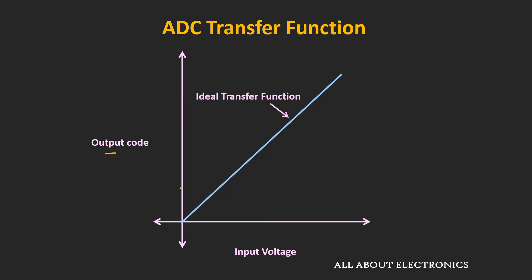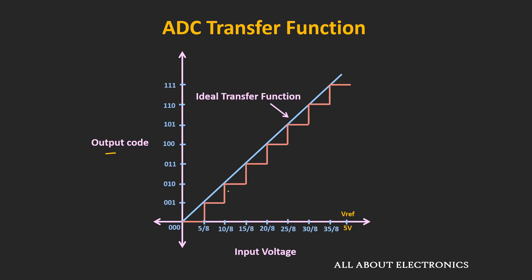The ideal ADC has infinite resolution, meaning for any change in the input voltage it has a corresponding output code. But if you see the actual transfer function, it looks like a staircase. This is the transfer function of a 3-bit ADC with a 5V reference voltage — a perfect transfer function without any kind of error.